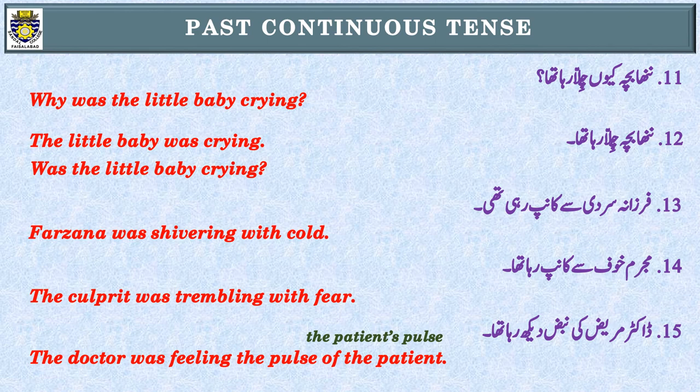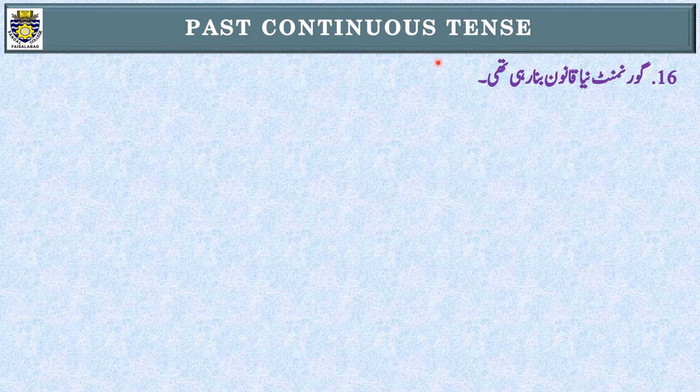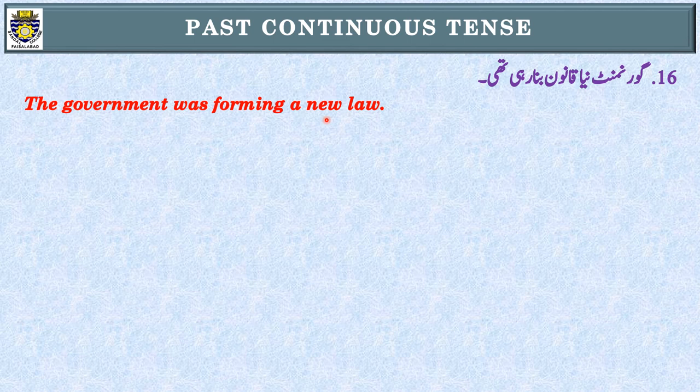Let's see some more examples. Sentence number sixteen: government نیا قانون بنا رہی تھی۔ First step: 'رہی تھی' — Past Continuous Tense۔ Second step: subject — 'government' — singular noun، was use کریں گے: The government was forming a new law.